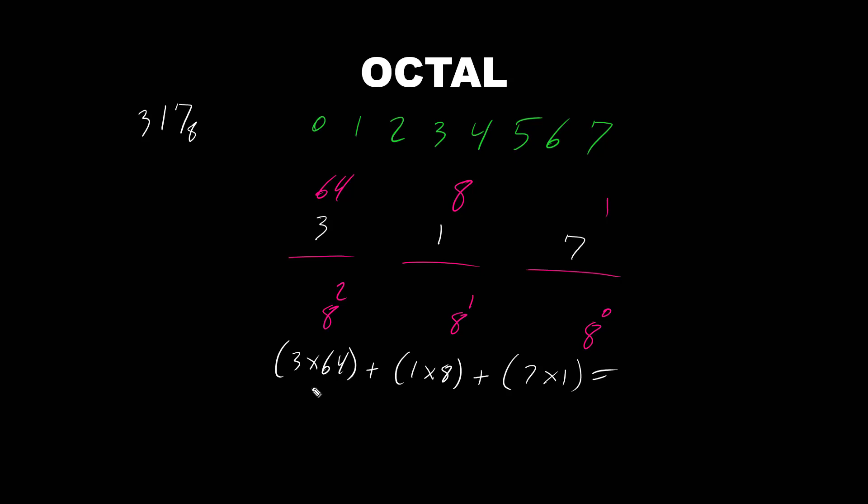3 times 64 is 192. 1 times 8 is 8. 7 times 1 is 7. 192 plus 8. That's 200 plus 7. 207.